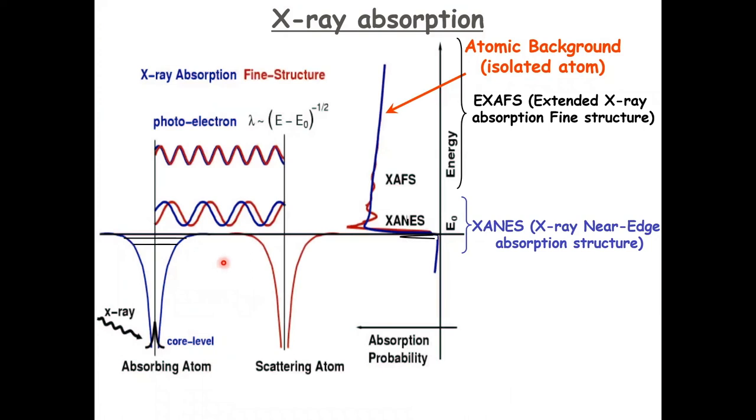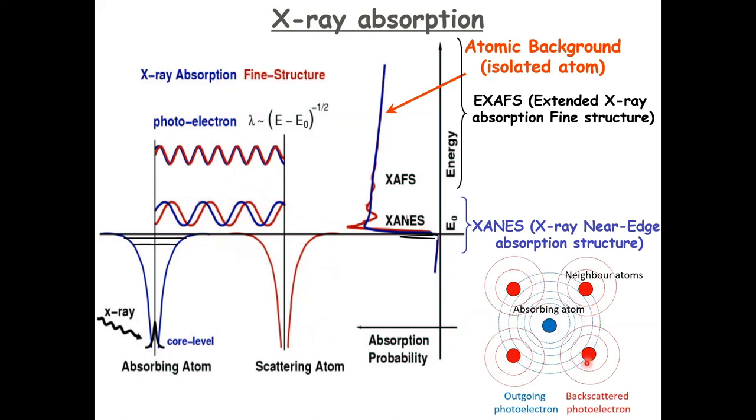Now, if this atom has a neighbor, like in a diatomic molecule, then this photoelectron will quantum mechanically scatter off this neighbor and there will be an interference pattern between the outgoing and the backscattered photoelectron waves, which gives rise to modulations of the absorption coefficient. These modulations are what we call XANES, X-ray near-edge absorption structure, and EXAFS, extended X-ray absorption fine structure.